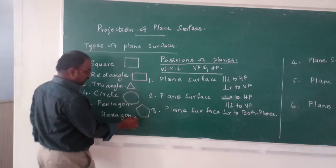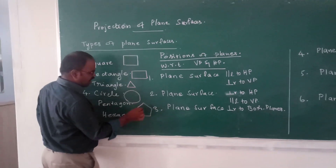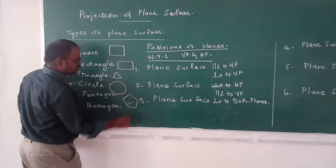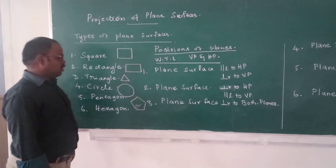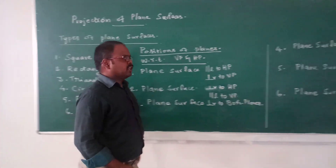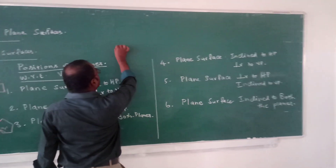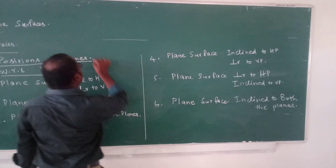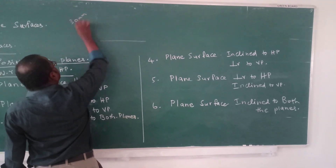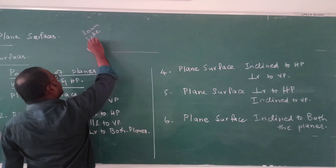The angle between two sides of a pentagon is 108 degrees. Now let's see how to draw the pentagon. First, you have to draw a line of 30mm side for the pentagon.